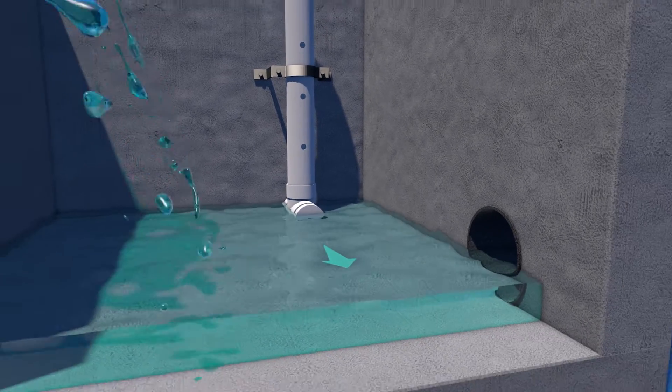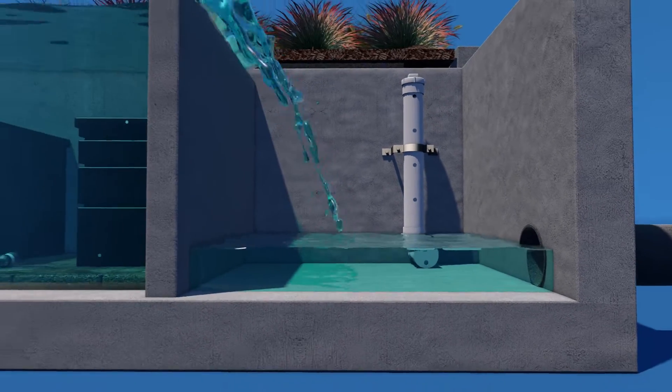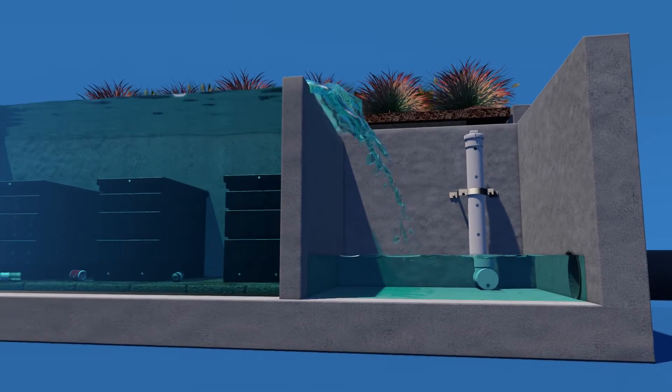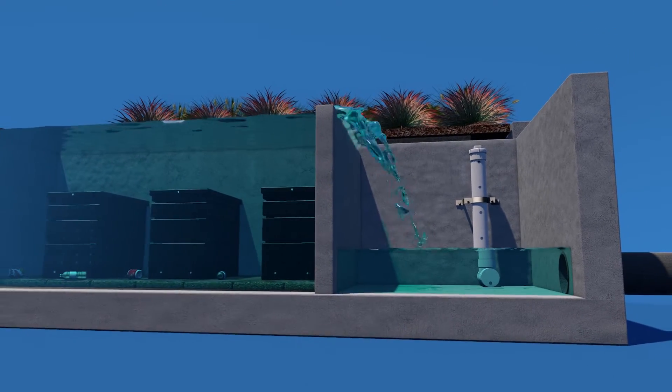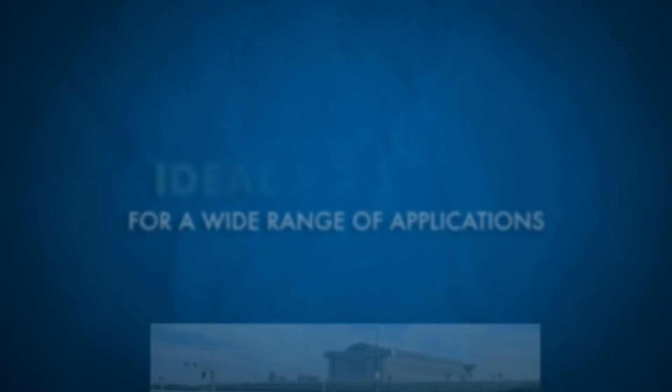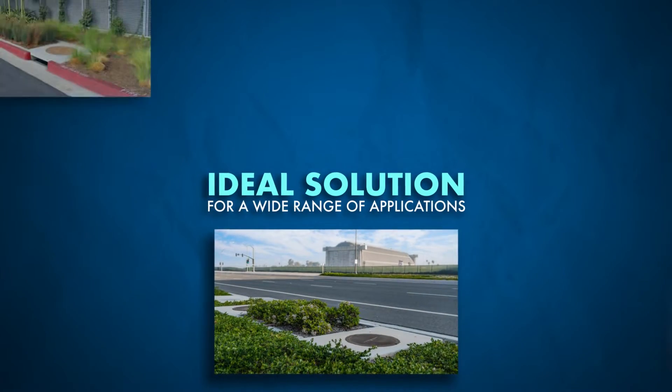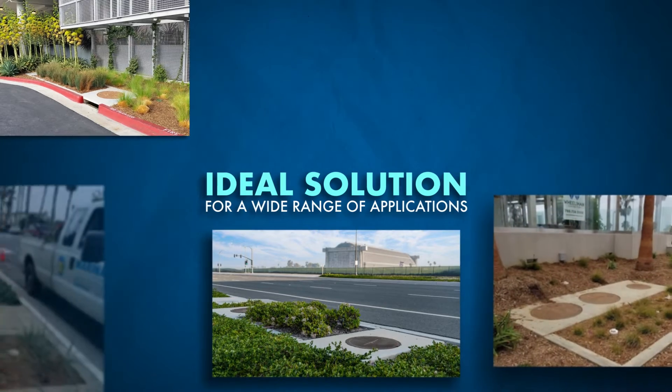During peak flows, an internal weir allows high flows to bypass treatment, eliminating flooding and the need for a separate bypass structure. The modular wetlands linear is offered with pipe-in and built-in curb inlets options.